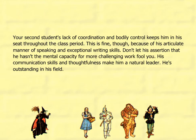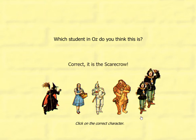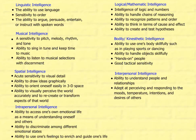Your second student's lack of coordination and bodily control keeps him in his seat throughout the class period. This is fine because of his articulate manner of speaking and exceptional writing skills. Don't let his assertion that he hasn't the mental capacity for more challenging work fool you — his communication skills and thoughtfulness make him a natural leader. He's outstanding in his field. It's the scarecrow! What type of intelligence does the scarecrow have?